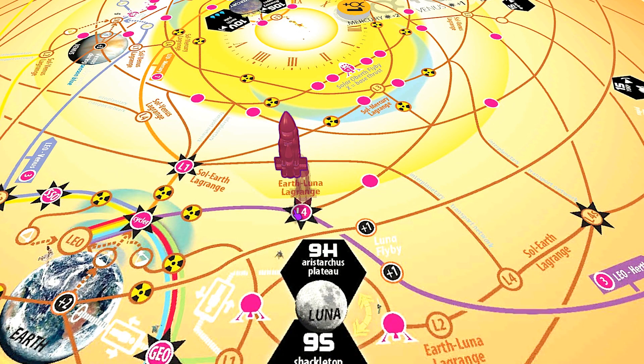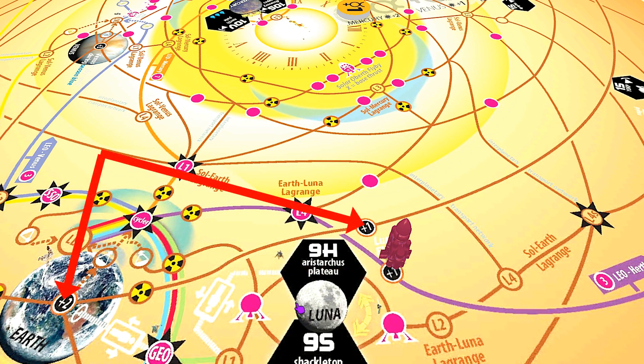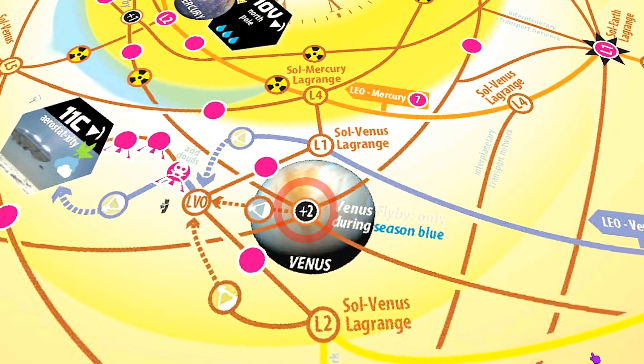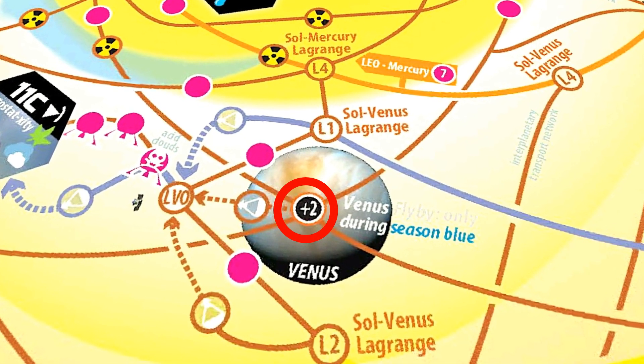After that, our next burn is at the Earth-Luna Lagrange. As I pass by the moon, I get a little boost from the gravity. If you look on certain planets and certain spaces, you can see that any spacecraft flying through that space gets an extra number of burns equal to the numbers in the black circle. This is known as a flyby. Venus, for example, is plus two, although the flyby is only possible during season blue.